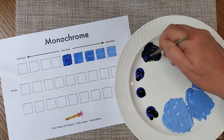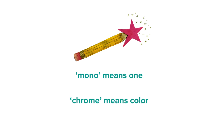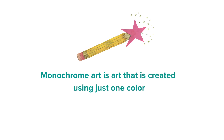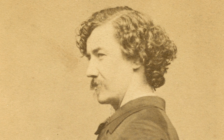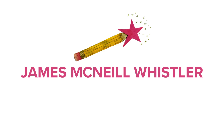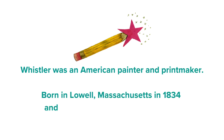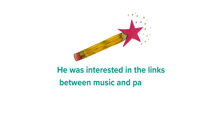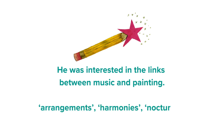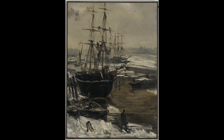While we work on this row of shades, let's think about monochrome art. Have you heard this word before? 'Mono' means one and 'chrome' means colour, so monochrome art is art created using just one colour. Let's look at an artist famous for using monochromatic tints, tones, and shades in his work — his name is James McNeill Whistler. Whistler was an American painter and printmaker, born in Lowell, Massachusetts in 1834 and he died in London, England in 1903. He was interested in the links between music and painting, and many of his paintings are called by musical names like arrangements, harmonies, and nocturnes.